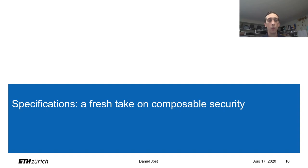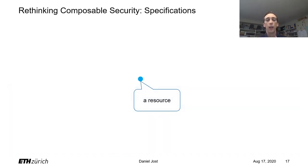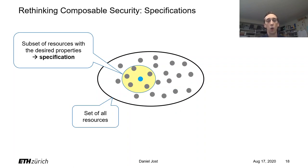To answer this question, let me do a quick detour and look at how the Constructive Cryptography Framework uses specifications as its main objects. In the Constructive Cryptography Framework by Maurer and Renner, one always makes statements about so-called resources, which are essentially the analog to functionalities in the UC framework. Traditionally one might show that a real-world resource is computationally indistinguishable from some ideal-world resource. However, we can make a more general statement: we can show that our real-world resource is contained in the set of all resources having some desired properties — and such a set we simply call a specification.